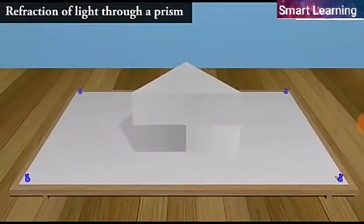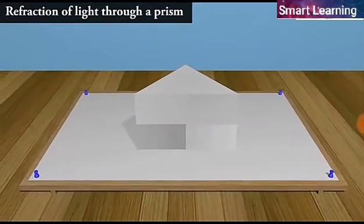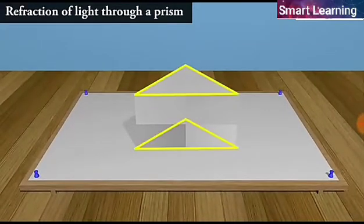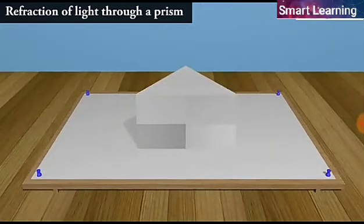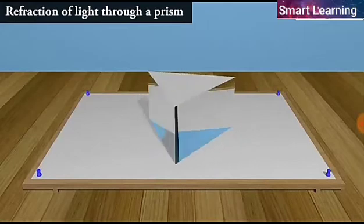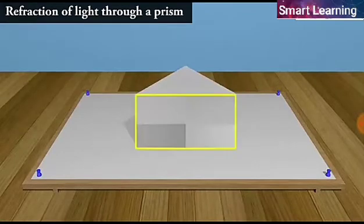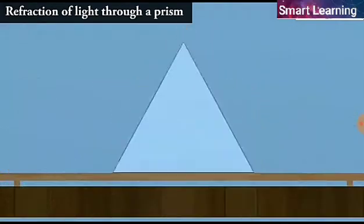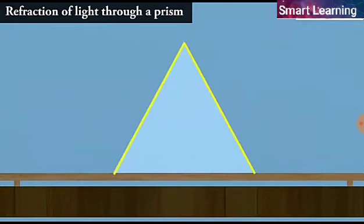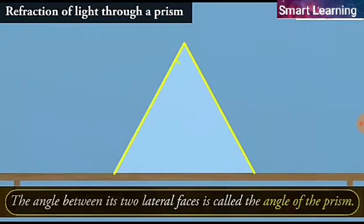Consider a triangular glass prism. It has two triangular bases and three rectangular lateral surfaces. These surfaces are inclined to each other. The angle between its two lateral faces is called the angle of the prism.